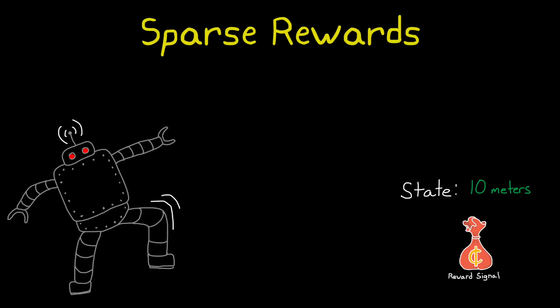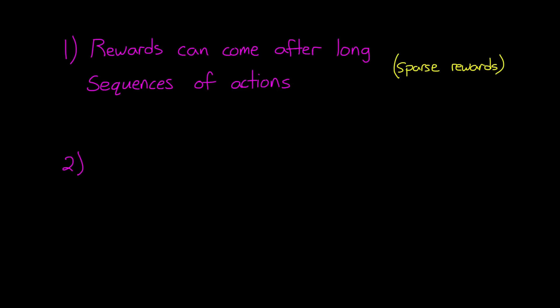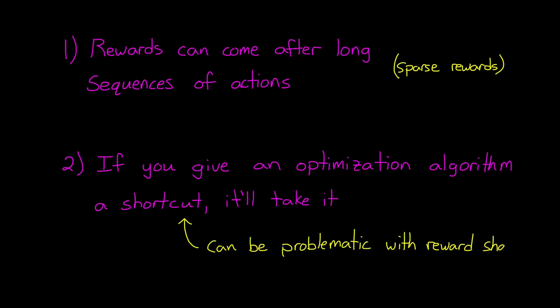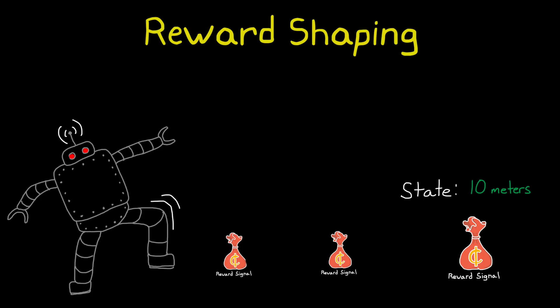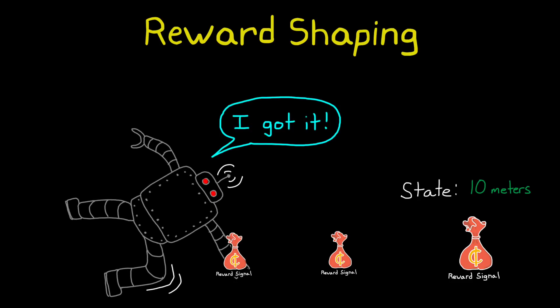This sparse reward problem can be improved by shaping the reward, providing smaller, intermediate rewards that coax the agent along the right path. But reward shaping comes with its own set of problems. And this is the second reason crafting a reward function is difficult. If you give an optimization algorithm a shortcut, it'll take it. And shortcuts are hidden within reward functions, and more so when you start shaping them. This causes your agent to converge on a solution that is optimal, given the reward function, but not ideal. An easy example to think about is giving an intermediate reward if the body of the robot travels one meter from its current spot. The optimal solution might not be to walk that one meter, but rather fall ungracefully towards the reward. To the learning algorithm, walking and falling both provide the same reward, but obviously to the designer, one result is preferred over the other.